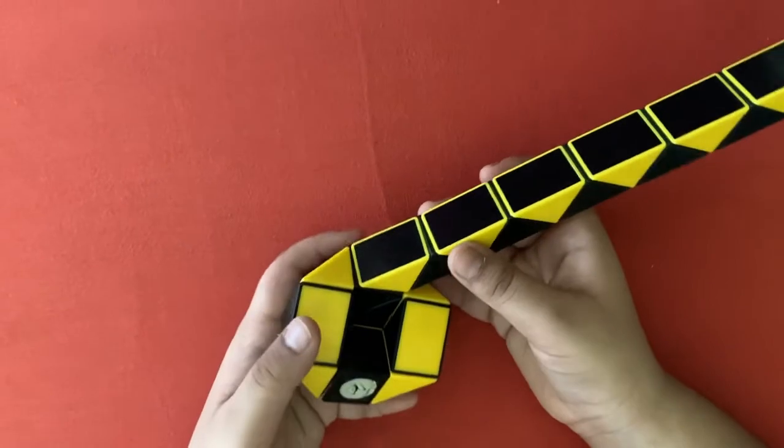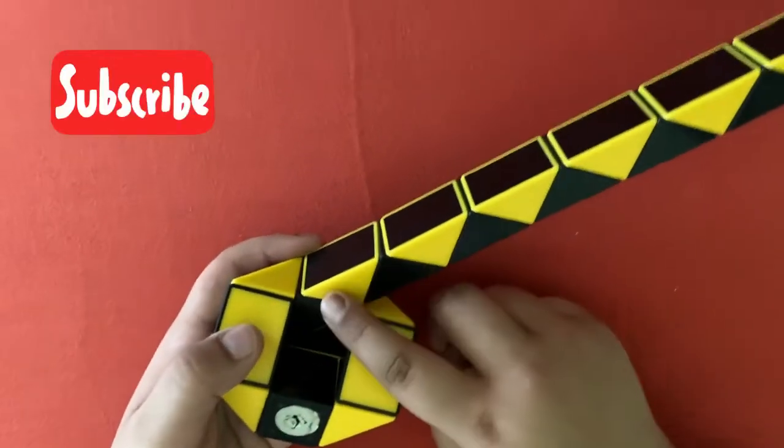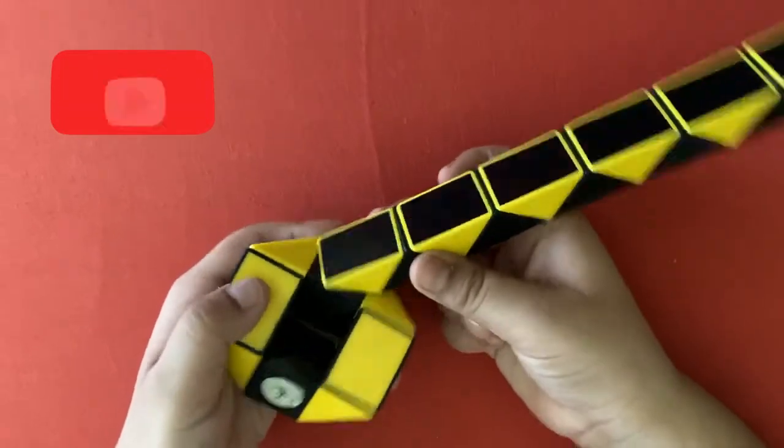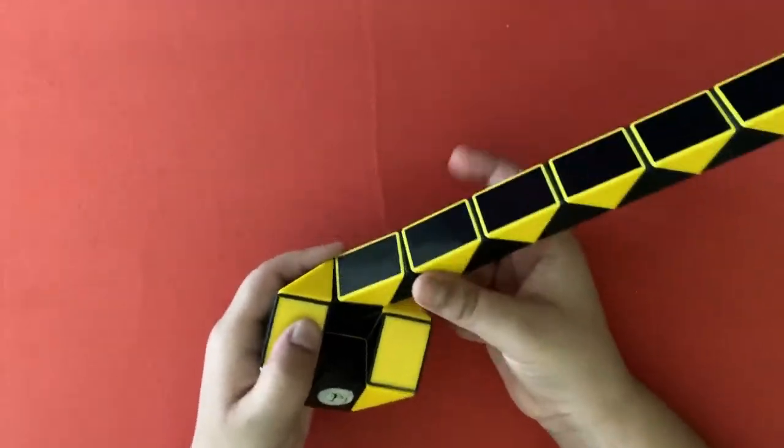Now rotate it like this. And now you need to count two pieces: one, two. Take the second piece, rotate it towards you.